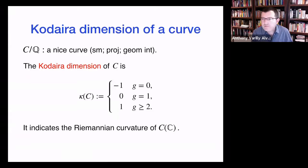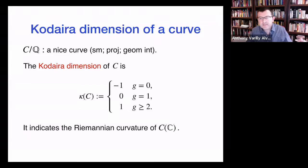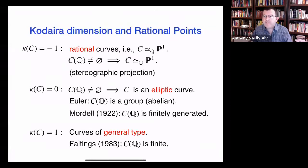Before I start talking about K3 surfaces, I just want to say a few words about curves. I expect what I'm about to say is very familiar to a lot of people in the audience, but it's just a reminder of why we're looking at K3 surfaces, by way of analogy with the situation on curves. So if you look at nice curves — smooth projective, geometrically integral — I'll be working mostly over number fields, but mostly really Q to simplify things. When you try to classify curves, the first thing you do is put them into three buckets according to their Kodaira dimension: genus zero, genus one, and higher genus.